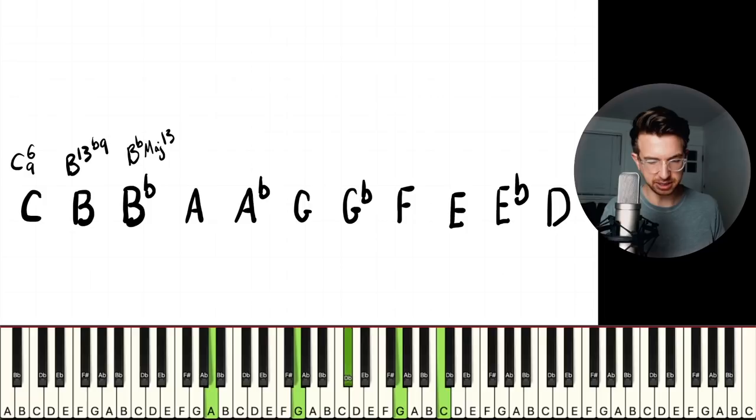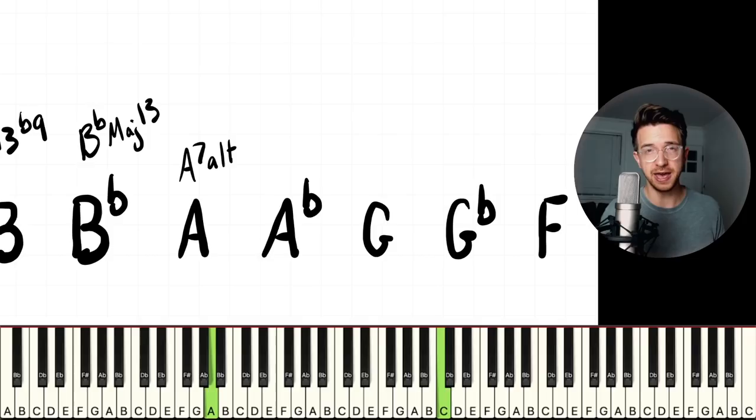Next one. All right, this is gonna be A altered, or A7 alt. That C on top of the A is a sharp nine, in my head at least. And we're gonna do something like that. That's gonna be with the root in the bottom, the flat seven, the third, the sharp five, and the sharp nine. So you could also think of it as A7, sharp nine, sharp five, or sharp five, sharp nine, however you wanna think about it. Okay, let's go a little faster here.